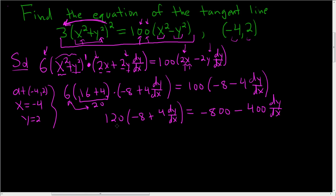Let's distribute this 120. So let's see, 8 times 120. Well, 8 times 100 is 800. 8 times 20 is 160. So this is negative 960 plus 480 dy dx equals negative 800. And then what else? Minus 400 dy dx.